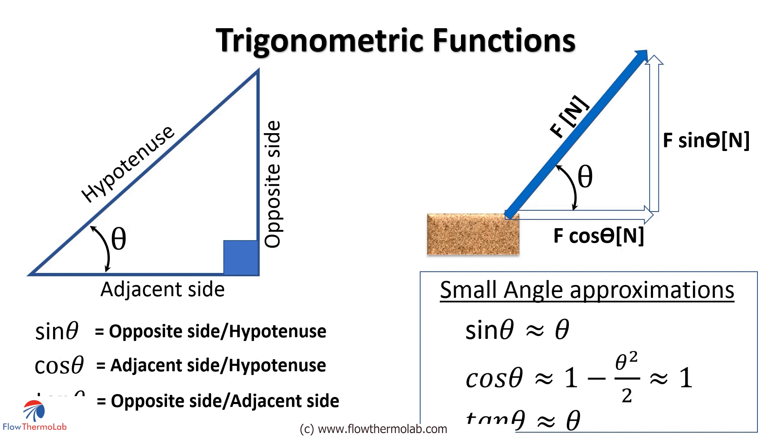Other important relation which you should remember is the small angle approximations. That is for a very small value of theta in radians, the value of sin theta is approximately same as theta itself. And cos theta will be approximately equal to 1. And for tan theta it will be again theta itself. This will be more clear when you plot these functions and look at the values closer to 0.